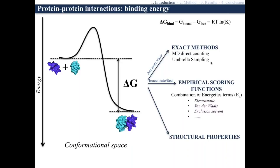On the other side, there are empirical scoring functions — another family of approaches that can be used to predict binding affinity. They are definitely faster, but also inaccurate because they are based on approximations. Since it's really time-consuming to describe the exact energy that keeps the two proteins together, those kinds of approaches use, for example, electrostatic interaction, van der Waals, exclusion of solvents, and many other terms. But because of the approximations, this can lead to errors. Besides those two families, there is also another family: structural properties.